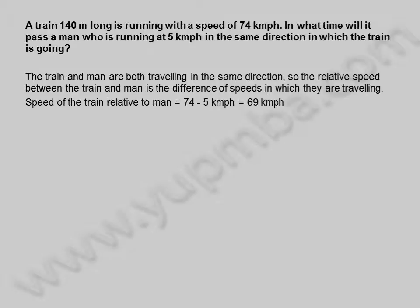Speed of the train relative to man is equal to 74 minus 5 kilometers per hour, which is equal to 69 kilometers per hour.